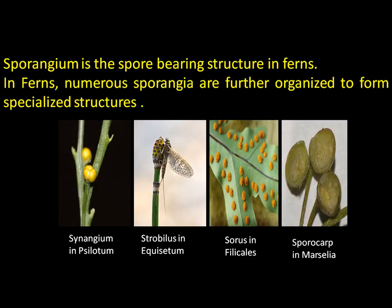In the case of Marsilea, there is another specialized structure called a sporocarp, or spore-bearing structure, which contains numerous sporangia inside. This is the way spores are organized inside sporangia in pteridophytes, which are further organized to form specialized structures.